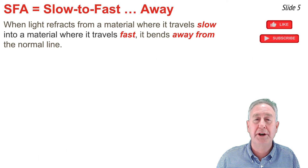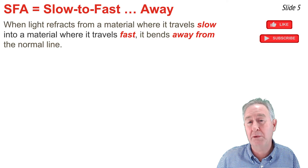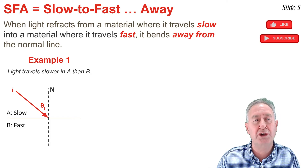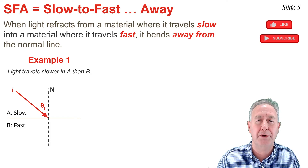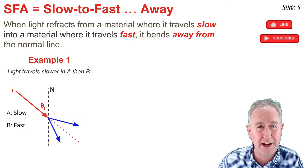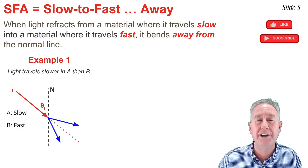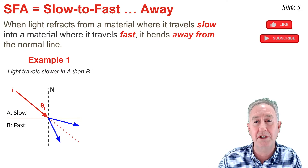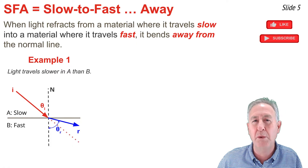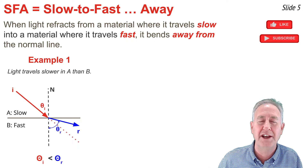When a light ray travels from a material where it's traveling slower into a material where it's traveling faster, it will bend away from the normal line. In this first example, we see the light ray is in the slower material A approaching the boundary with material B. Instead of traveling along the straight line path, for slow to fast, the bending occurs away from the normal line, such that the refracted ray is in the region between the dashed straight line path and the boundary line. The angle of incidence is smaller than the angle of refraction.